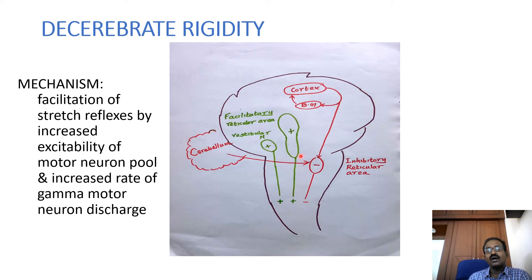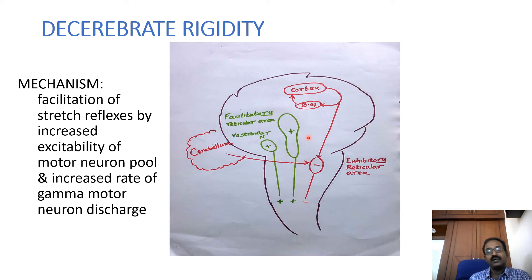The medulla has a small inhibitory reticular area, which is controlled by the cortex, basal ganglia, and cerebellum. The pons contains a larger facilitatory reticular area. It is not controlled by the cortex, basal ganglia, or cerebellum, so it spontaneously activates the facilitated reticular area and vestibular reticular area.